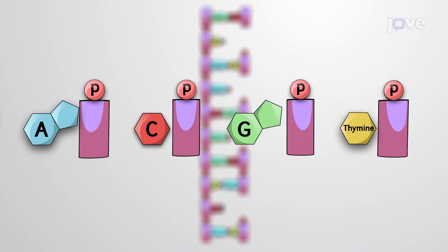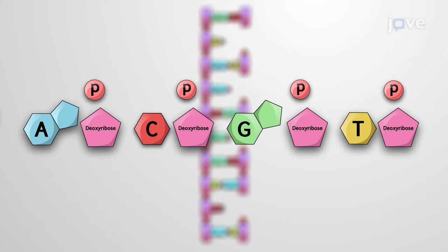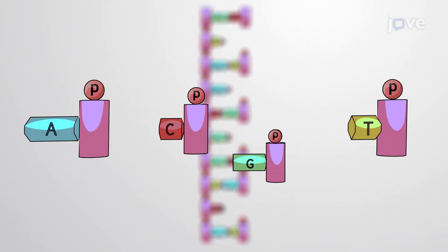Adenine (A), cytosine (C), guanine (G), or thymine (T), attached to a sugar deoxyribose. This arrangement creates the sugar-phosphate backbone of the DNA structure.